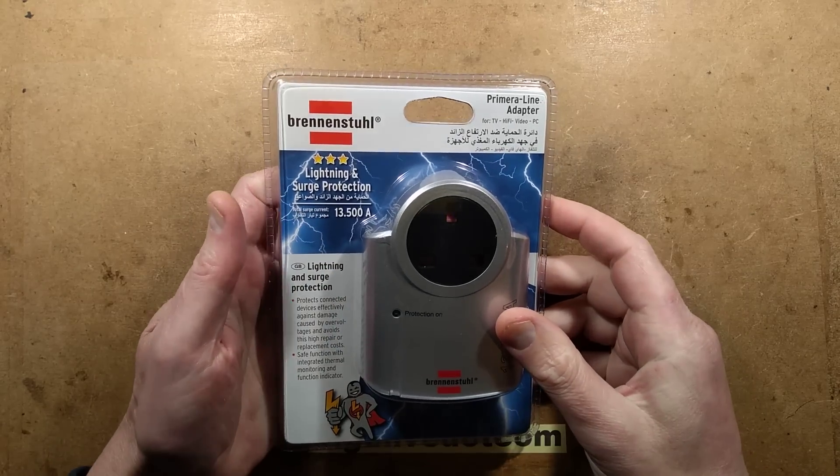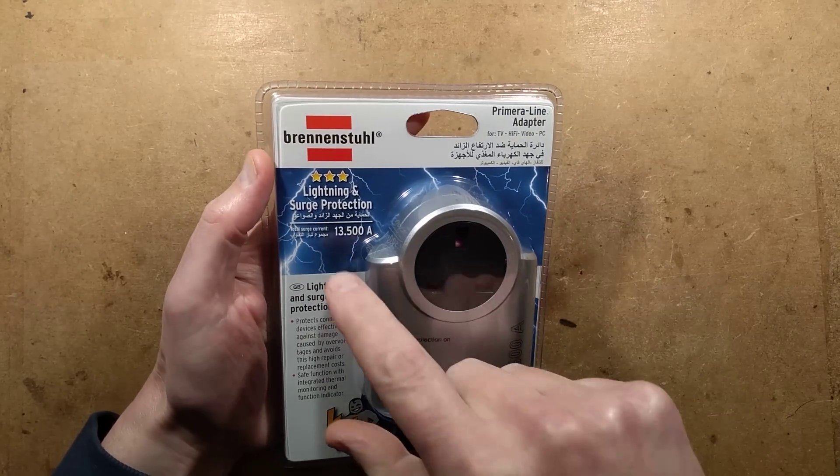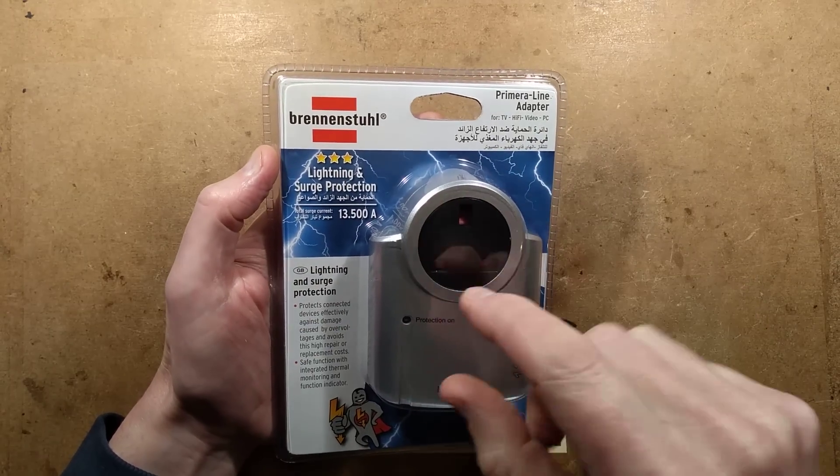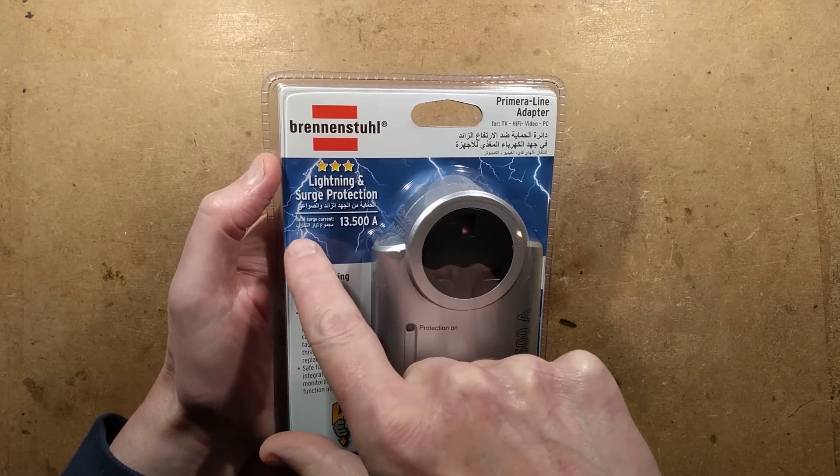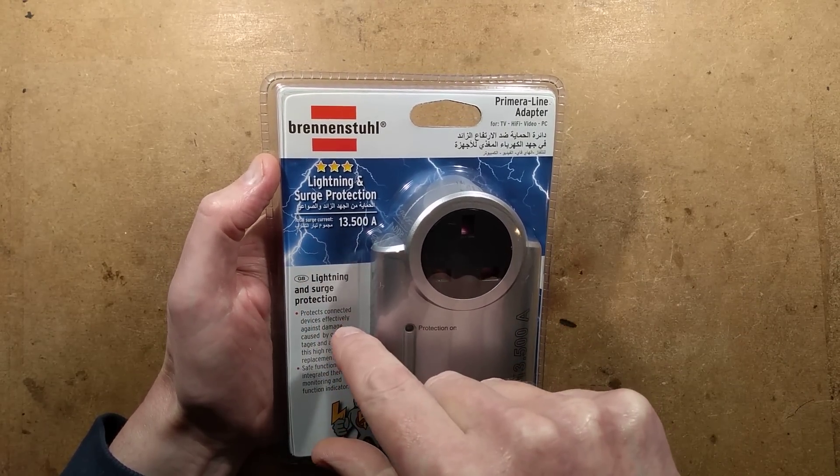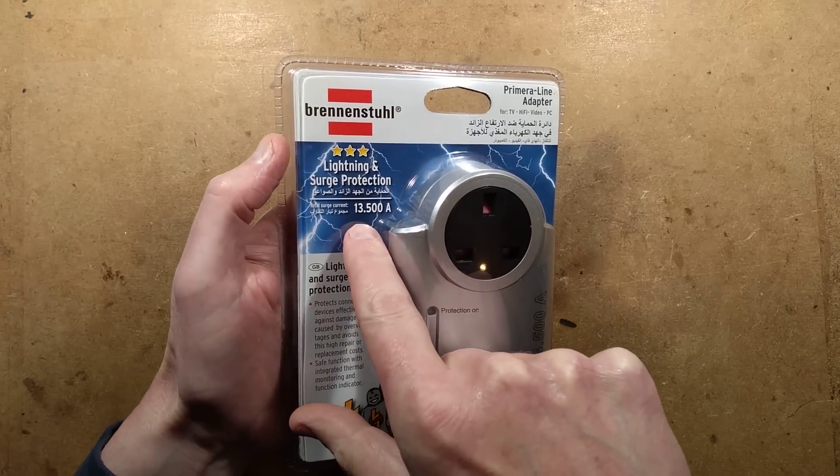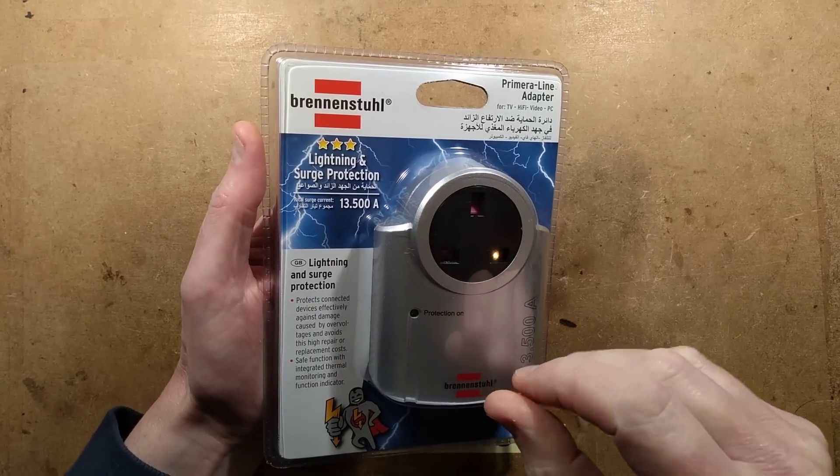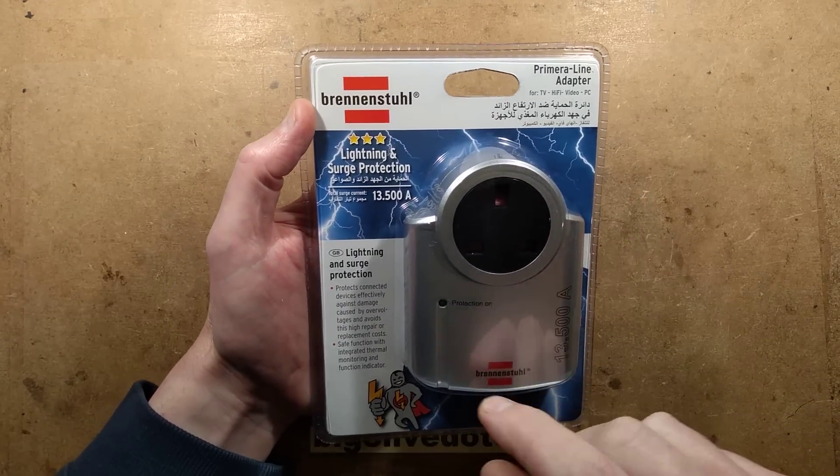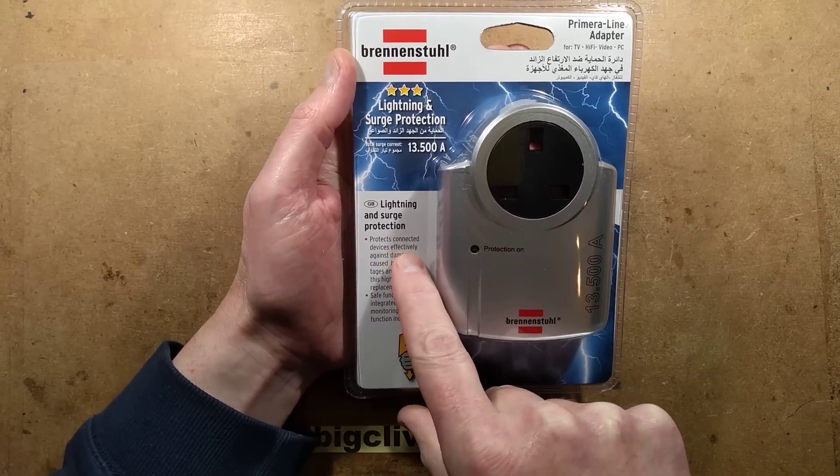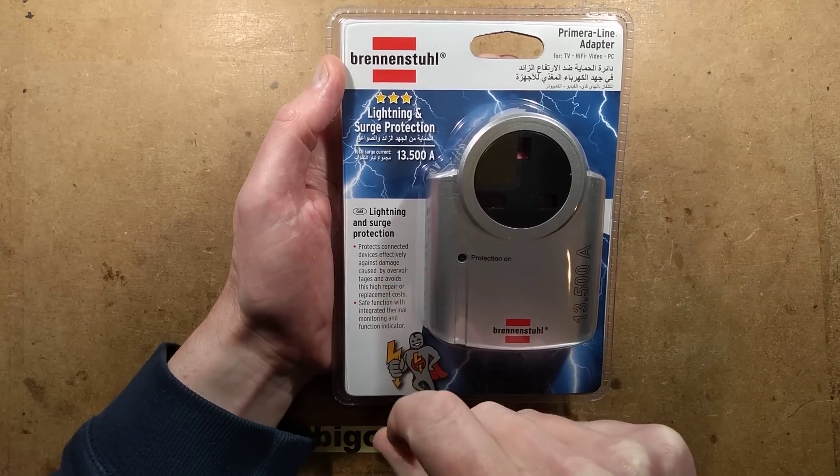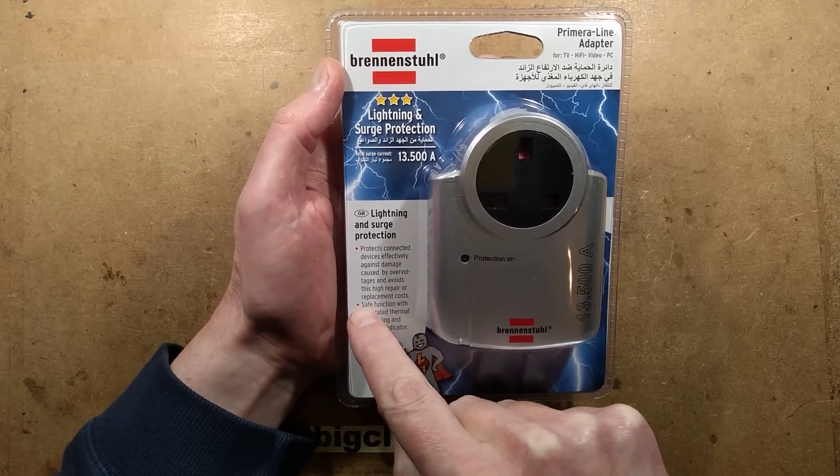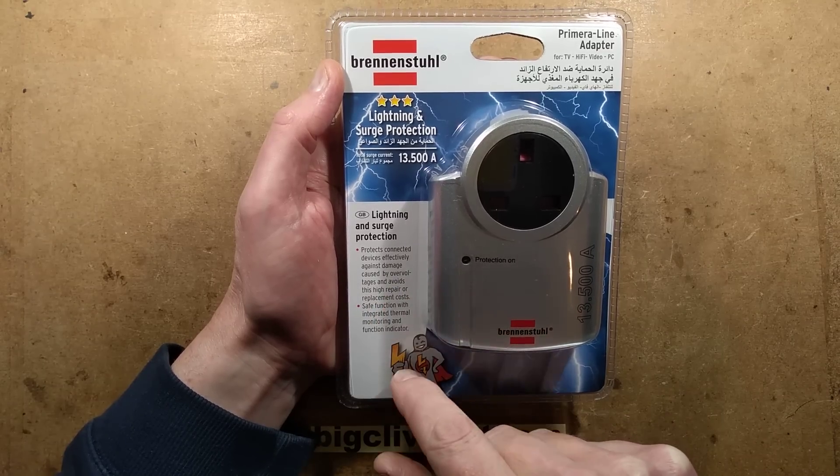A surge protector, I think we should take this to bits. It's a Brennenstuhl, lightning and surge protection, total surge current 13... now shouldn't that be a comma, 13,500 amp or is it 13.5 amp? Premier line adapter. It says lightning and surge protection protects connected devices effectively against damage caused by over voltages and avoids high repair or replacement costs. A bit of grammatical problem there.